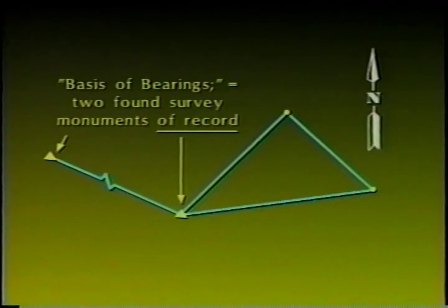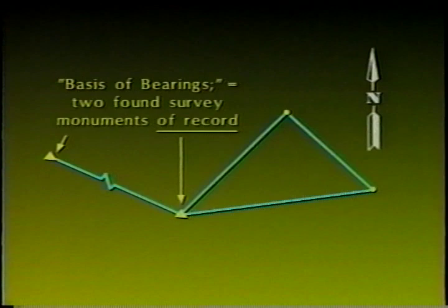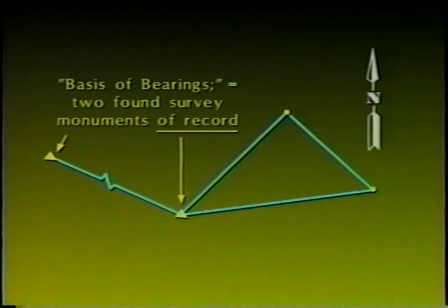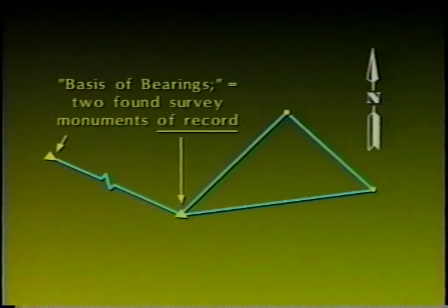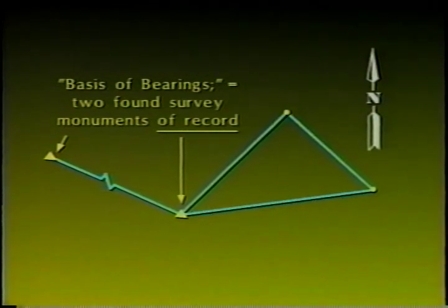For the majority of field surveys, a record bearing between found monuments — which were set per a subdivision map, parcel map, or record of survey — is the most commonly used Basis of Bearings. In the following example, we see that two found points of record are required. However, when control stations are not within the immediate project area, determining a Basis of Bearings by astronomical observation should always be considered a viable option.